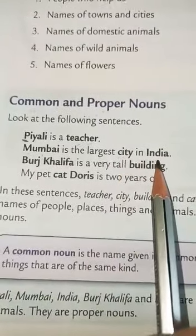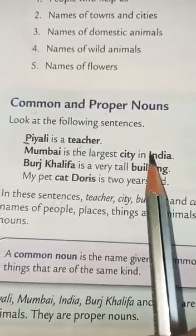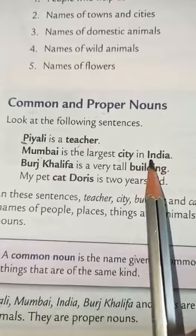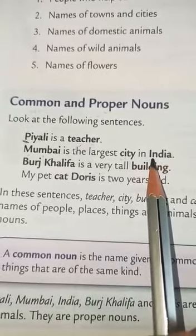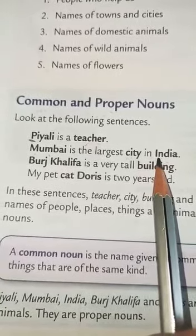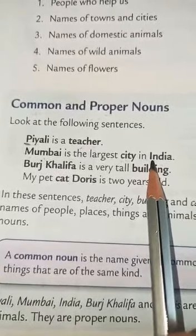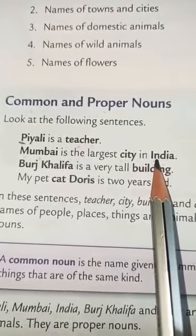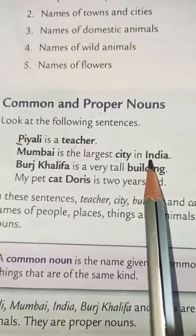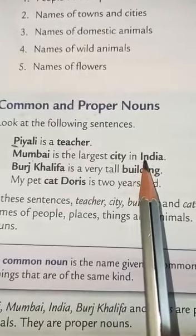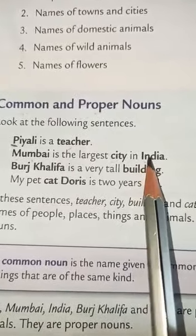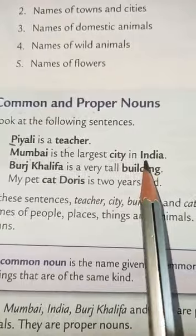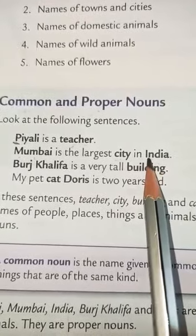Then we have India, written with a capital I. India is a specific country - there is only one India in the world. Similarly, America is one specific country. That is why these are proper nouns - they are the proper names of specific places.